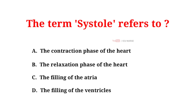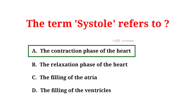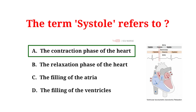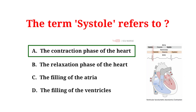The term systole refers to: A. The contraction phase of the heart. B. The relaxation phase of the heart. C. The filling of the atria. D. The filling of the ventricles. And the correct answer is A. The contraction phase of the heart. Systole refers to the phase of the cardiac cycle in which the heart's ventricles contract to pump blood out of the heart.